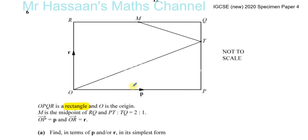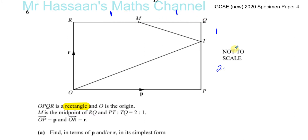M is the midpoint of RQ, and PT to TQ is in the ratio 2 to 1. I'm just putting a 1 here and a 1 here to show the ratios, not to show the lengths. So this is 2 parts and this is 1 part — it's just ratios of the lengths, that's all.